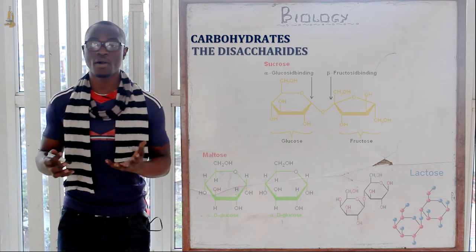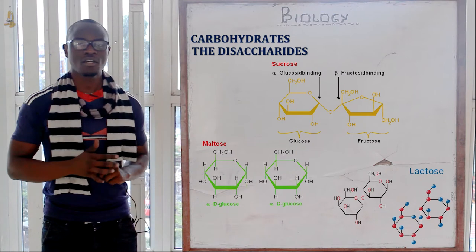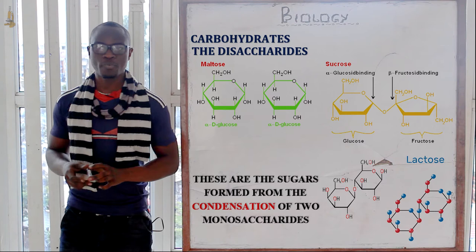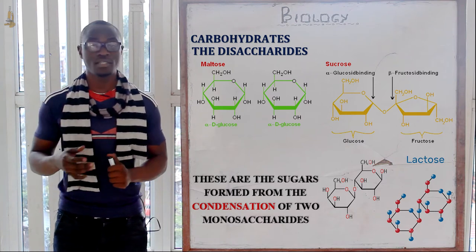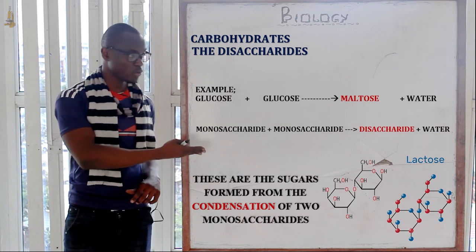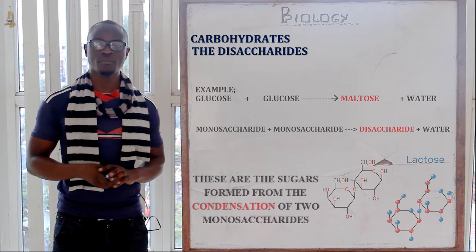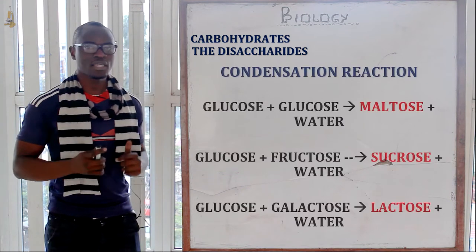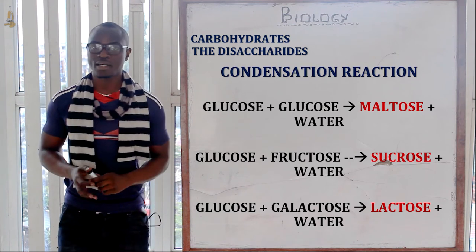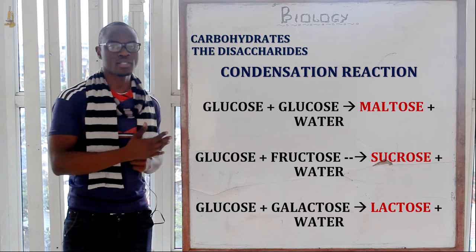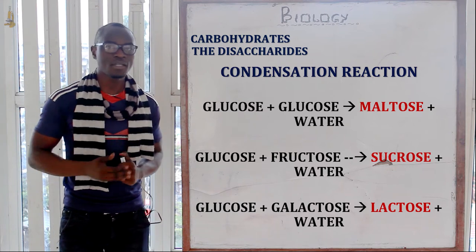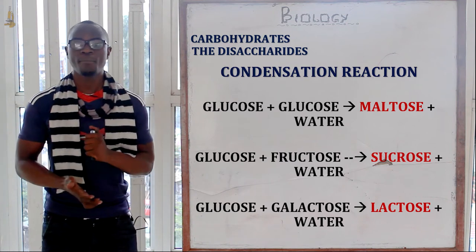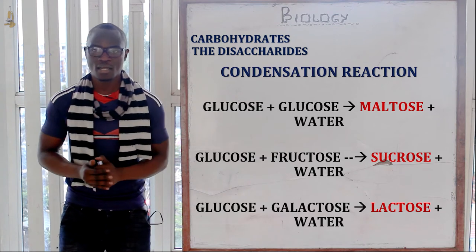Disaccharides are sugars formed by the condensation of two monosaccharides, a process involving the loss of a single water molecule. The three types are sucrose, maltose, and lactose. Combining glucose and fructose gives sucrose plus water; glucose and glucose gives maltose plus water; and glucose and galactose gives lactose plus water.